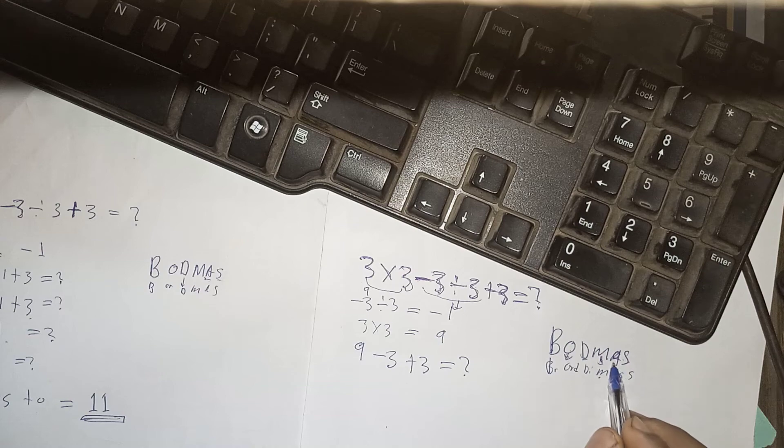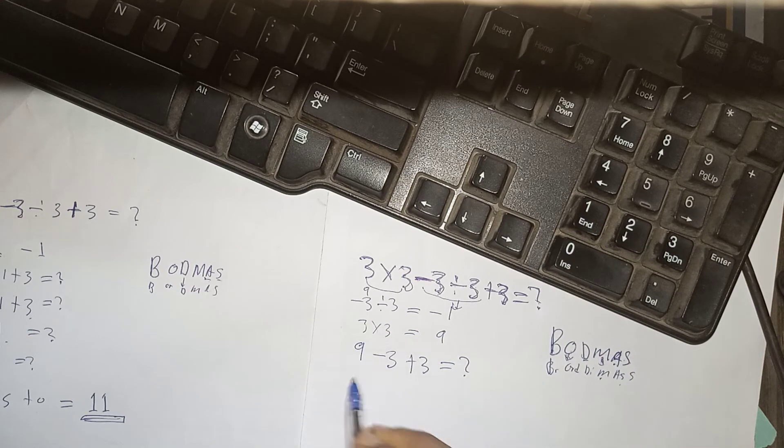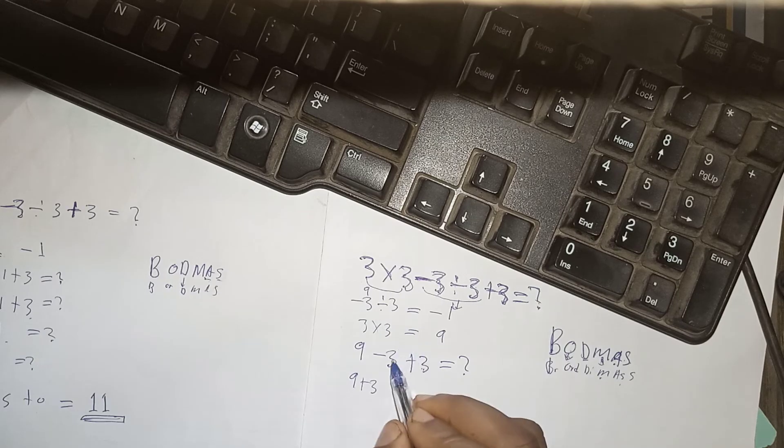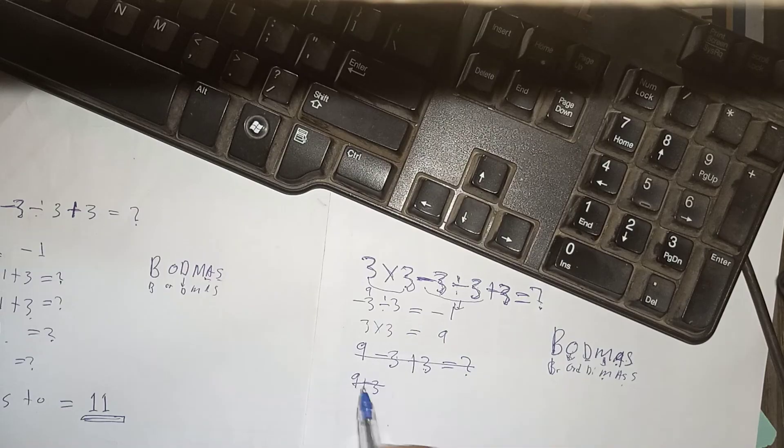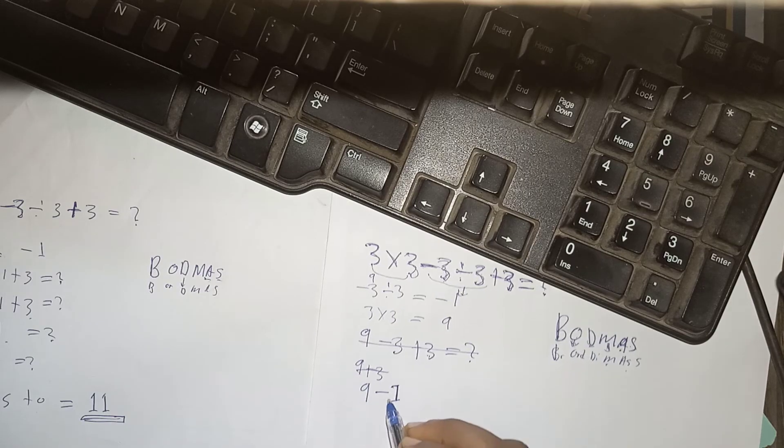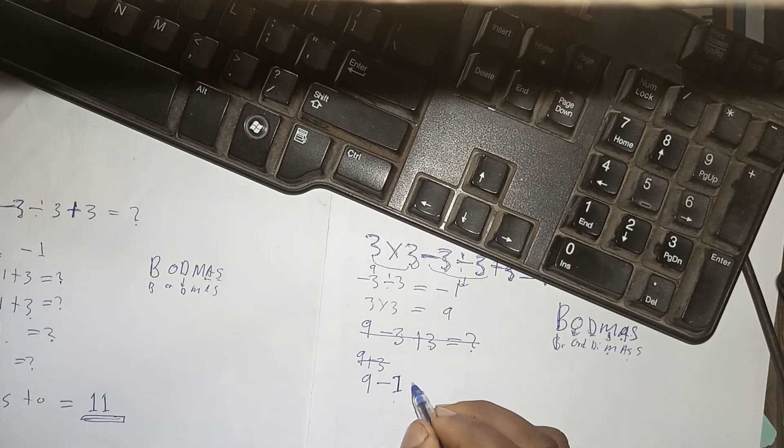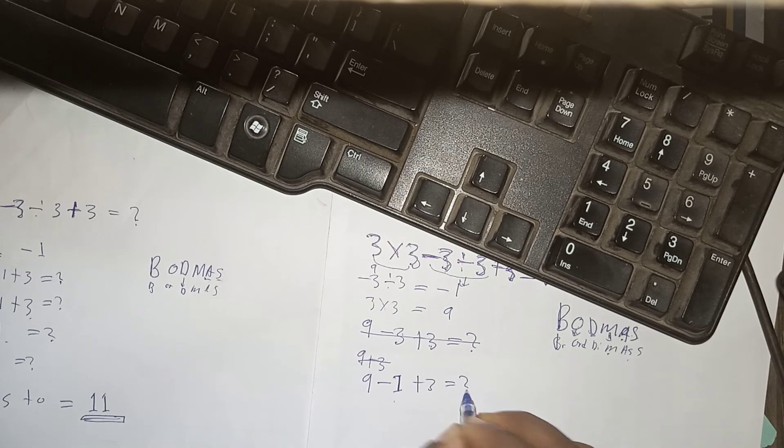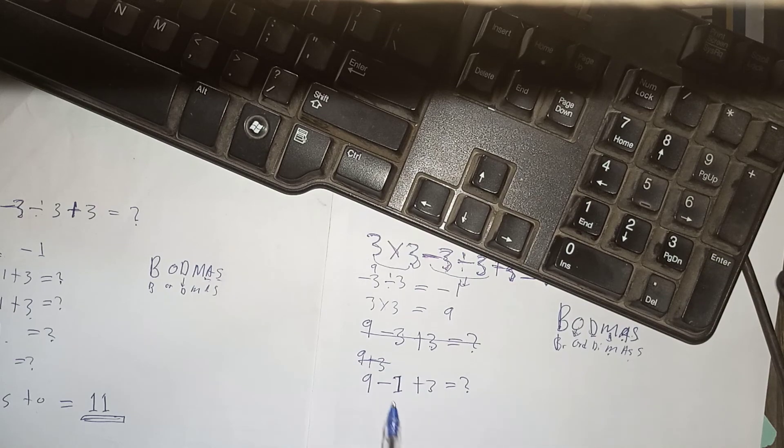The next thing we are going to do here is addition. So, what we are going to add is 9 plus 3. Plus this 3, which is. Sorry, there is an error here. Let's go back to this step. It is 9 minus 1. 9 minus 1 plus 3 is equals.